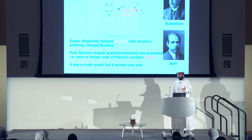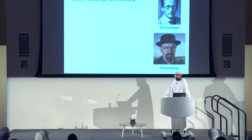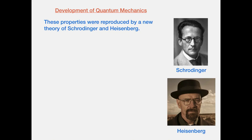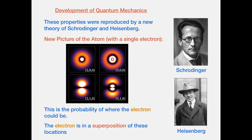A theory that reproduced the correct results of this model was due to Schrödinger and Heisenberg — the physicist, not the one from Breaking Bad. They independently arrived at the same theory: quantum mechanics. This theory gave us a new picture of the atom.